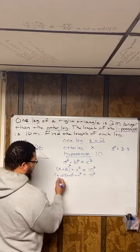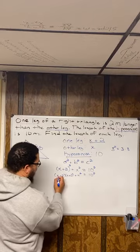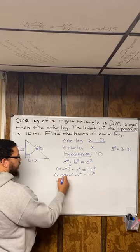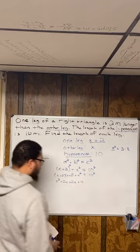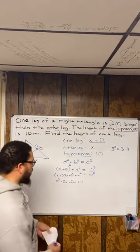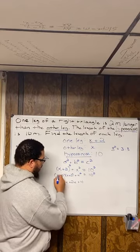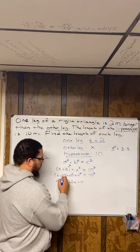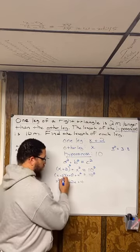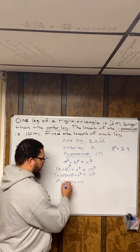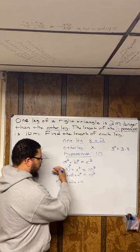Using FOIL: X times X is X squared. The outer is X times 2, that's 2X. The inner is 2 times X, that's 2X. The last is 2 times 2, that's 4. So X plus 2 times X plus 2 equals X squared plus 2X plus 2X plus 4. Then I bring down plus X squared, and equals 100 — since I simplified 10 squared to 100 now because eventually I'm going to have to do that anyway.